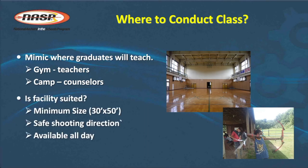Is the facility well-suited for training? The minimum size is determined by the range. The width is determined by the length of the arrow curtain backstop — it's 30 feet long, so the width of your training area needs to be at least 30 feet. The depth is determined by where candidates will be shooting from and waiting to shoot — about 40 feet from the back wall, so about 50 feet of depth is required. So 30 by 50 is considered a minimum size.